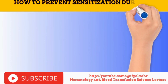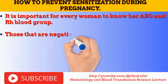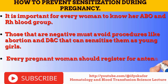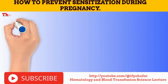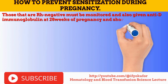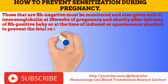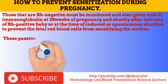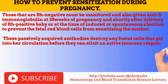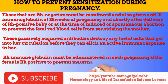How to prevent sensitization during pregnancy: 1. It is important for every woman to know her ABO and ROH blood group. 2. Those that are negative must avoid procedures like abortion and D&C that can sensitize them as young girls. 3. Every pregnant woman must register for antenatal care in a recognized medical facility. 4. Those that are ROH negative must be monitored and also given anti-D immunoglobulin at 28 weeks of pregnancy and also shortly after delivery of an ROH positive baby, or at the time of induced or spontaneous abortion, to prevent the fetal red blood cells from sensitizing the mother. These passively acquired antibodies destroy any fetal cells that got into her circulation before they can elicit an active immune response. 5. ROH immunoglobulin must be administered in each pregnancy if the fetus is ROH positive, to prevent maternal sensitization.